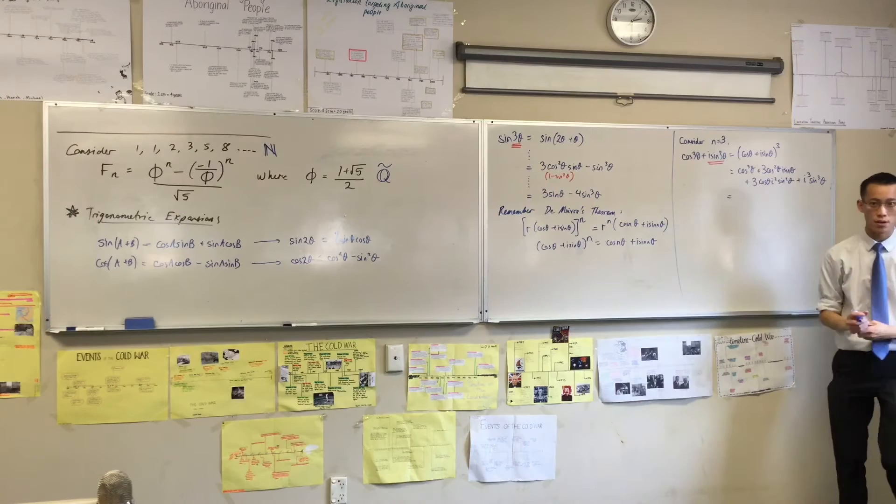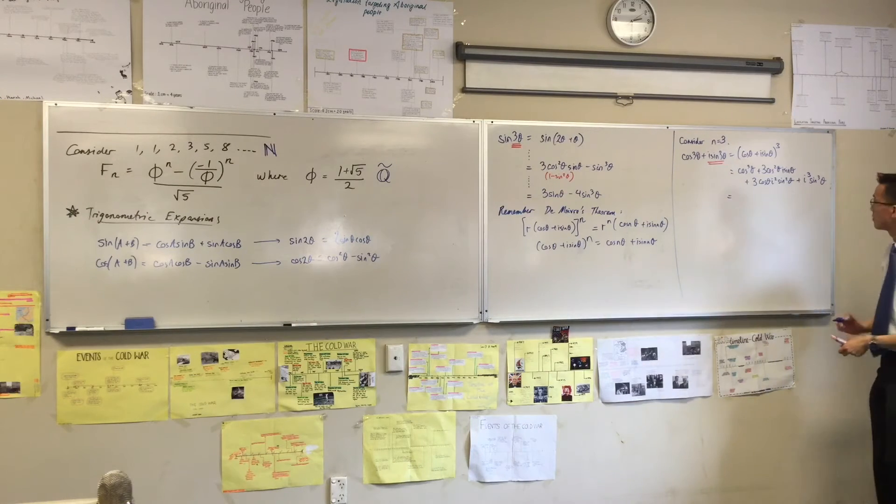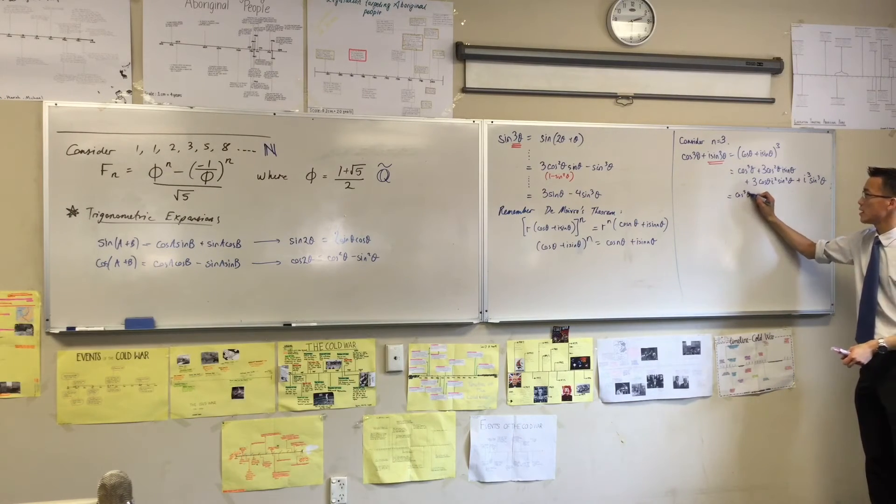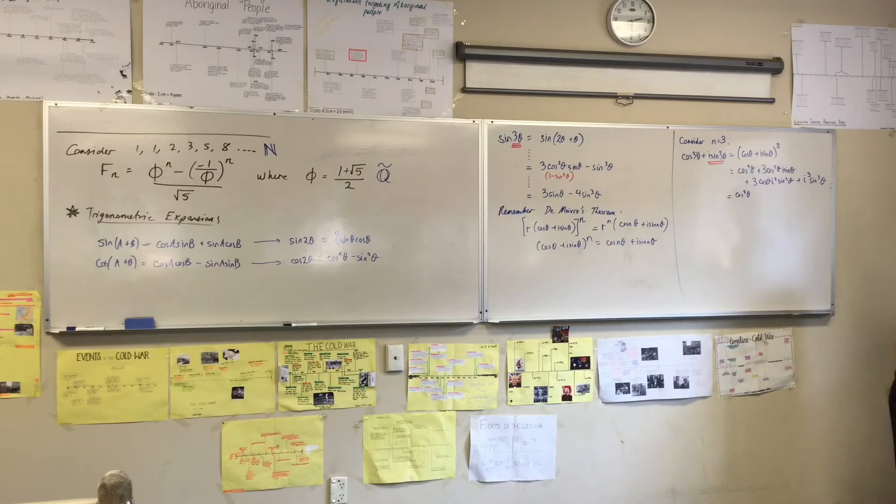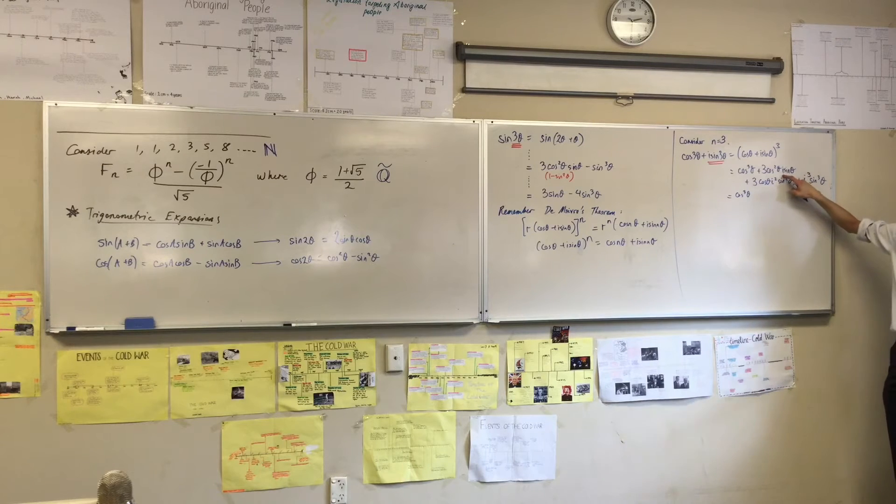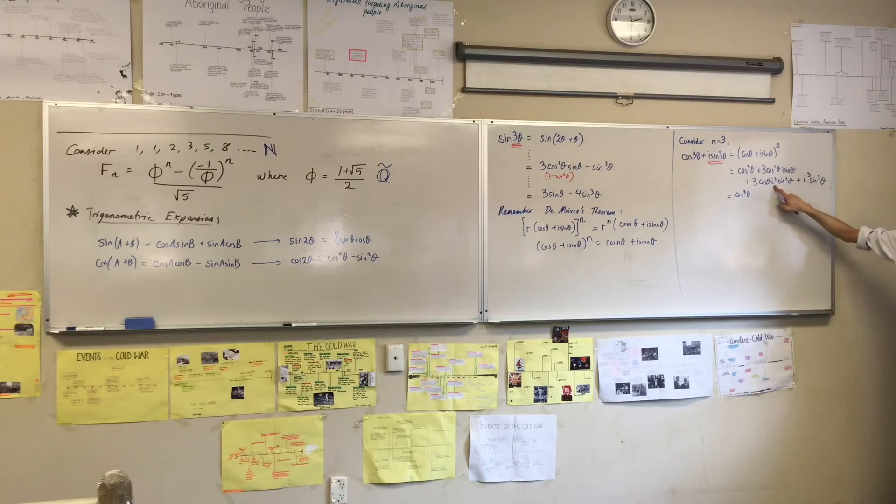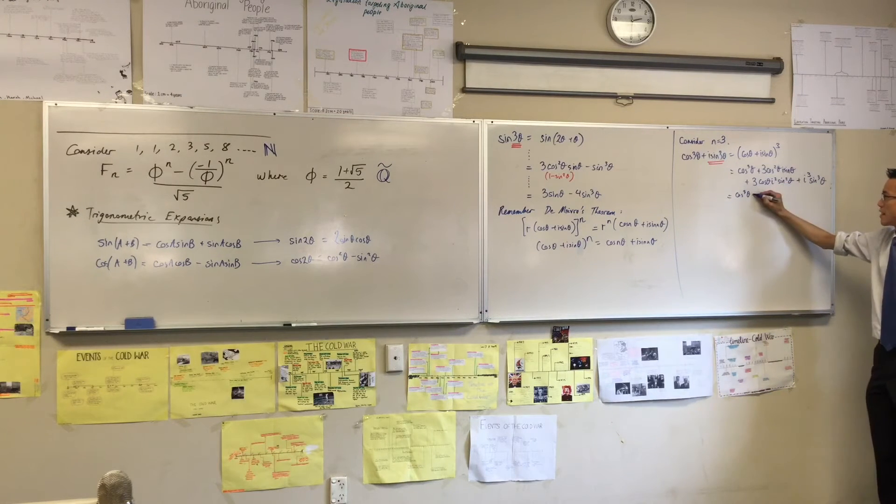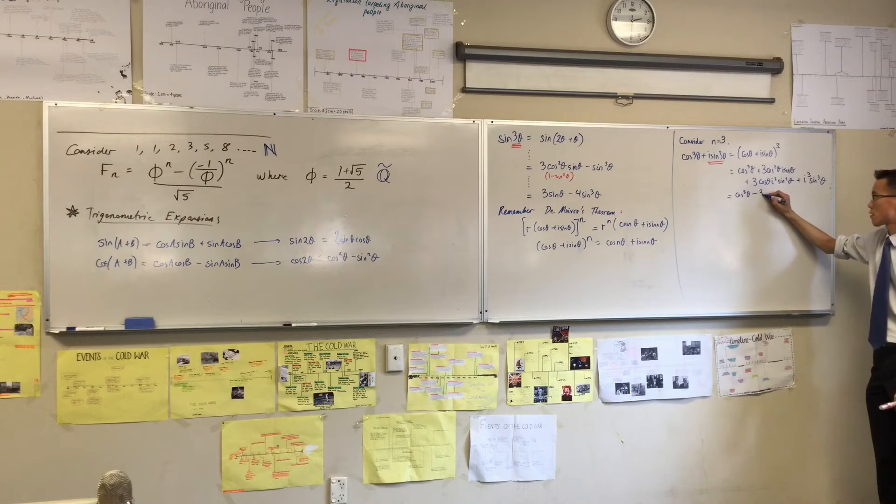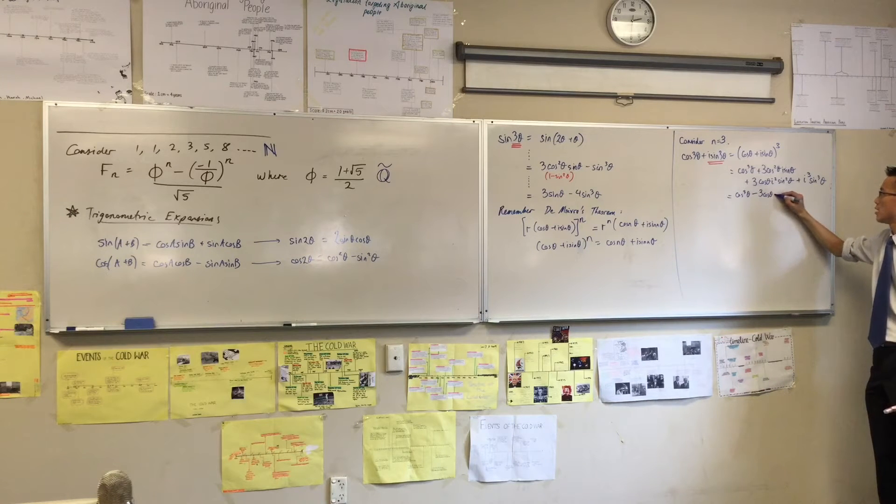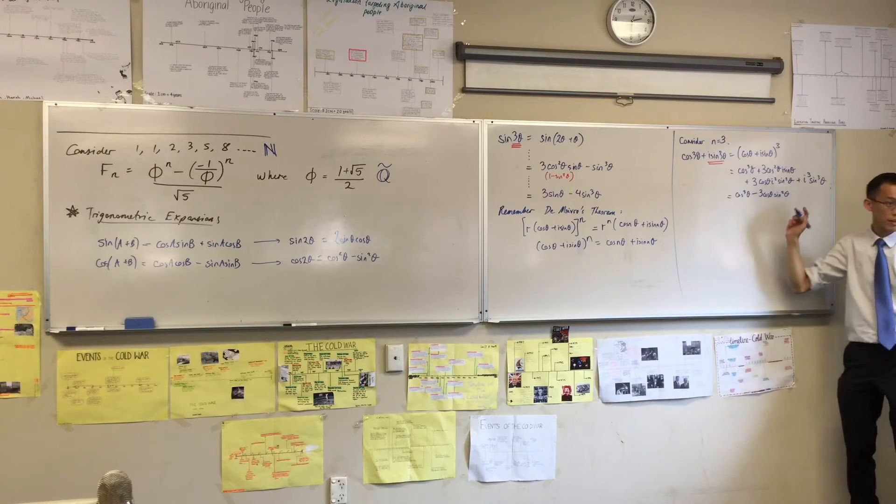Tell me which are the real components first. We'll just gather them in one spot. Cos cubed is clearly a real part. What else is real? Looks like that is real, isn't it? This has got an I in there, and it can't cancel out. This has got too many I's in there, so it can't cancel out. But this is just going to become minus 1, negative 1. So let's write that. That's minus 3 cos theta sine squared. Do you agree? There's the real bit.